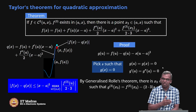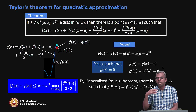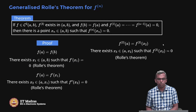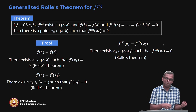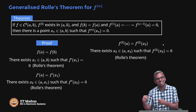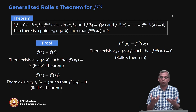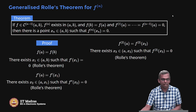Now we have done constant, linear, and quadratic approximation, so now we are going to do general n. What if we keep pushing this to higher and higher degrees? For that we need the generalized Rolle's theorem for Fn. It is very similar to what we had for F prime, F2, F3, etc. — just extending that.